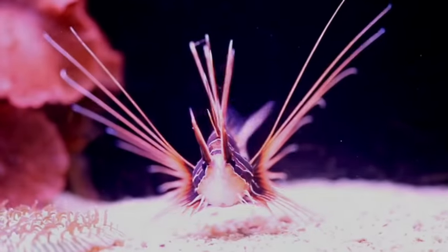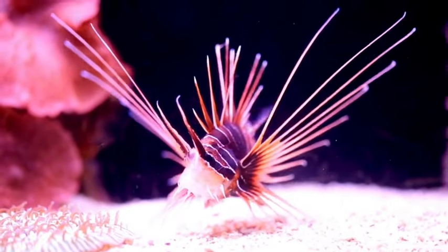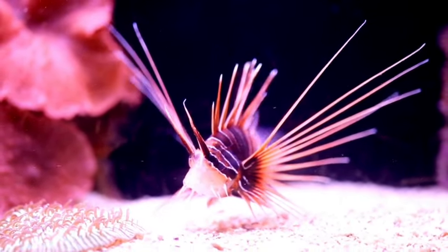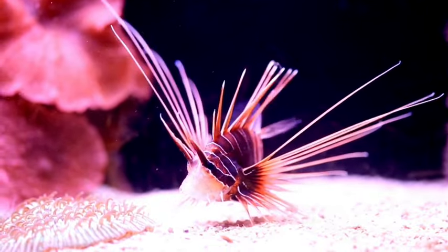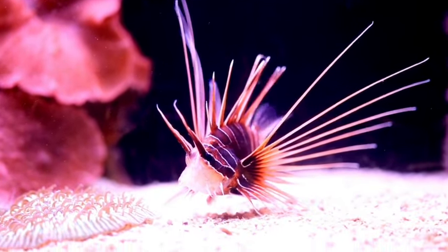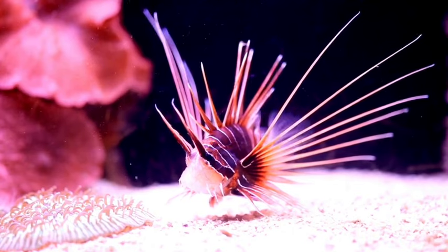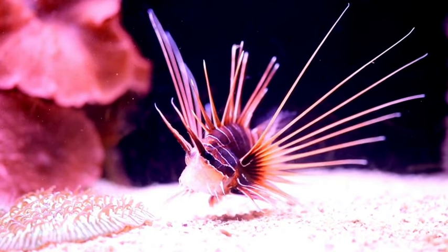In fact, where the ultimate source of energy for life is not sunlight, but the Earth itself. Huge red-tipped tube worms, ghostly fish, strange shrimp with eyes on their backs, and other unique species thrive in these extreme deep ocean ecosystems.